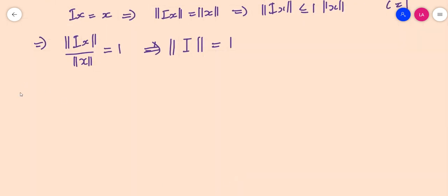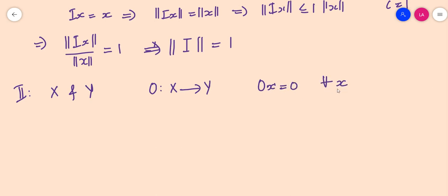The second example is the zero operator. Let X and Y be two normed spaces and define the operator 0 from X to Y by 0(x) = 0 for all x. This is also a bounded linear operator because norm(0(x)) = norm(0) = 0, which is less than or equal to 0 · norm(x).